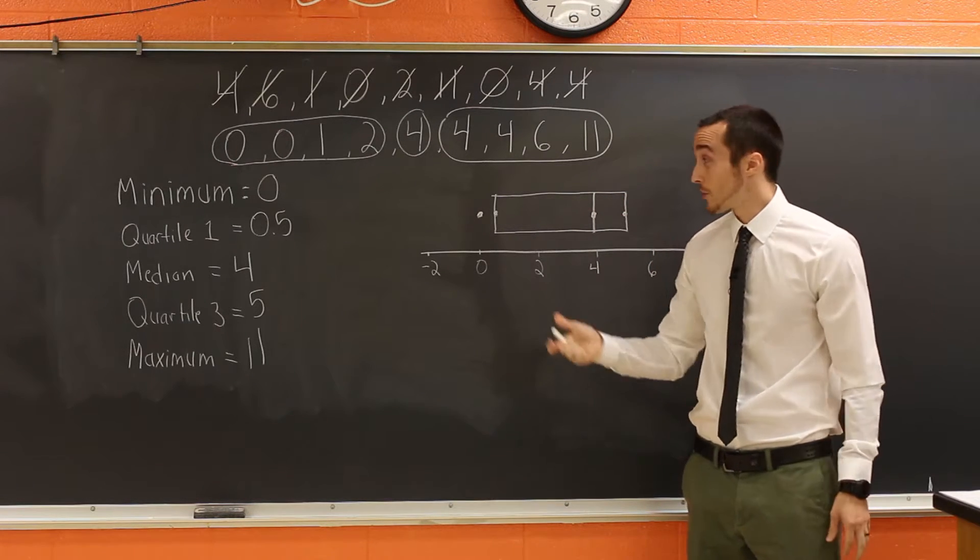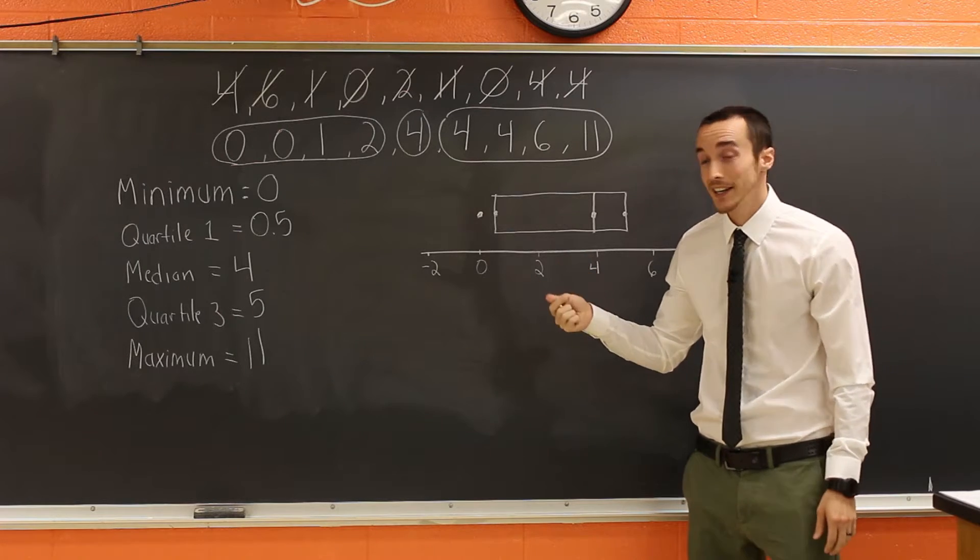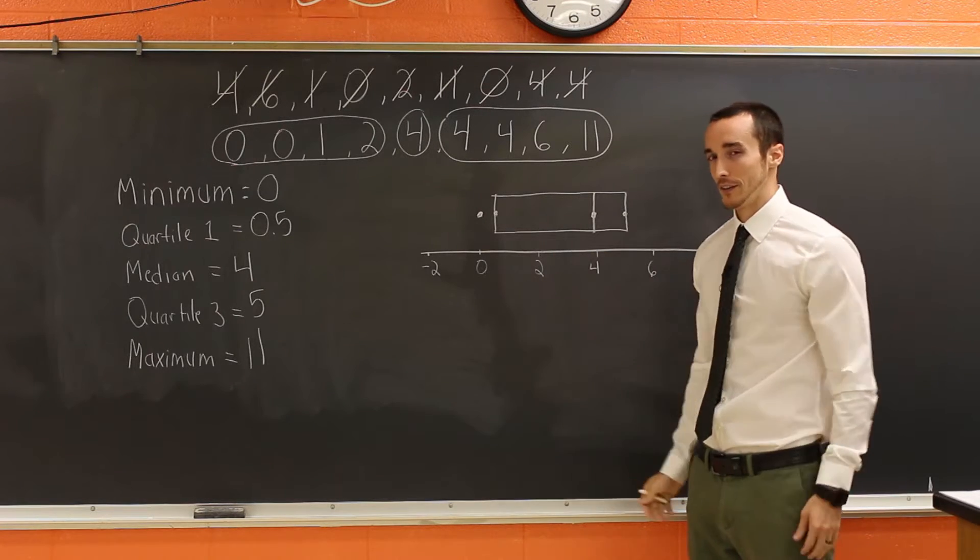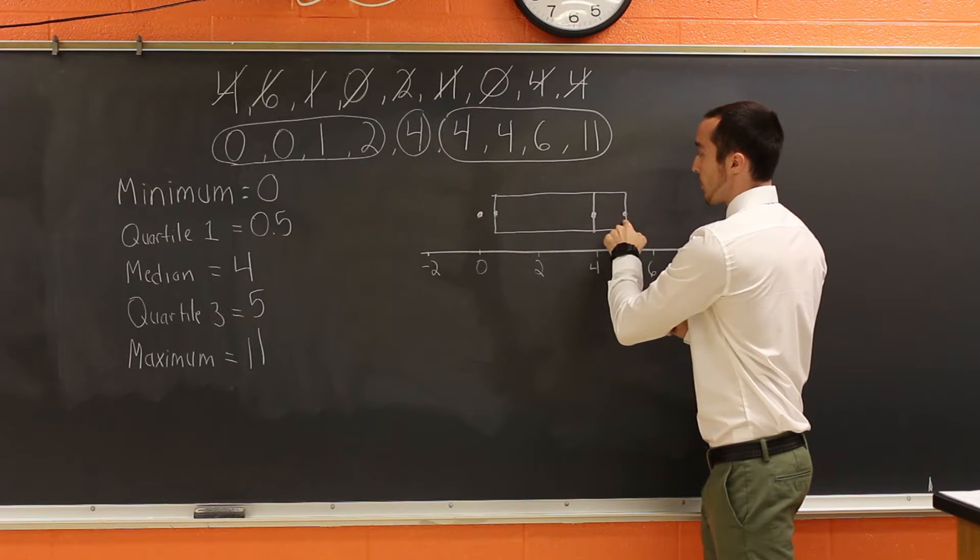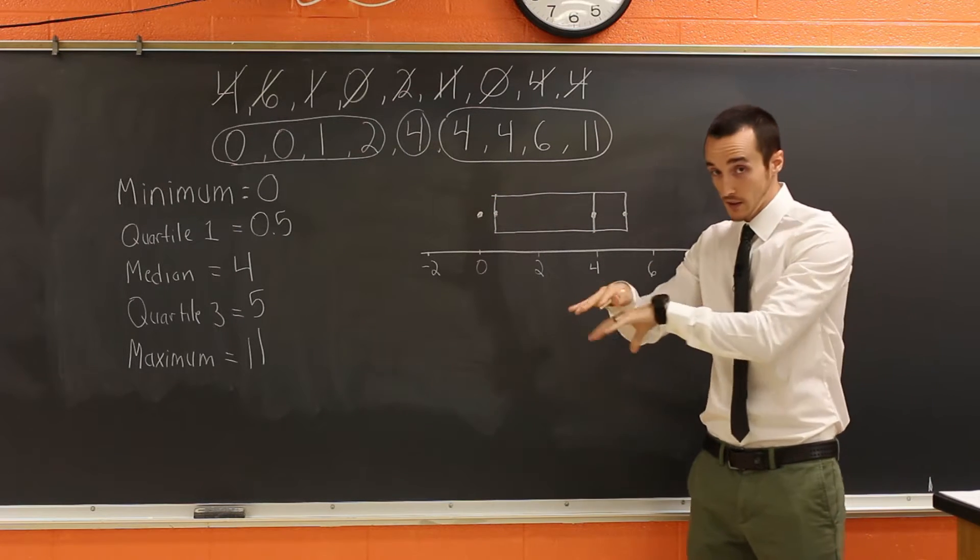If you've never done one of these before, this probably looks ridiculous, right? You'll see where this is going here in a second. So we drew a rectangle through essentially the second number, third number, and fourth number. That's the box part of this.